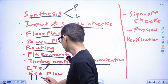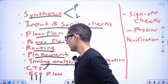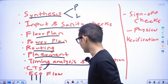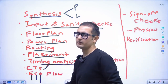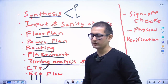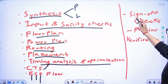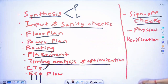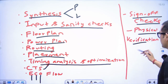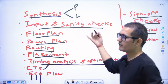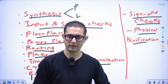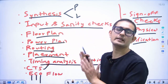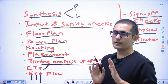ECO stands for engineering change order. It is basically for improving the design on the basis of client requirements. Then sign-off checks — this is part of physical design verification. Physical design verification is basically verifying what you have designed, so you should know physical design verification as well. These are the main skill sets.